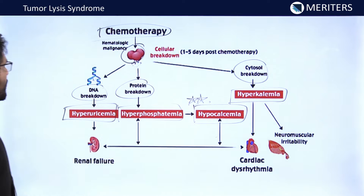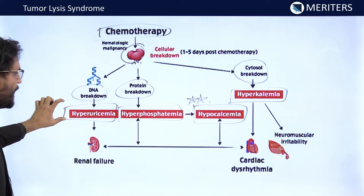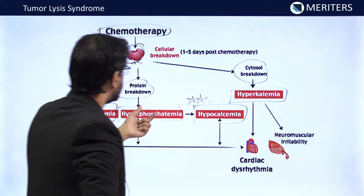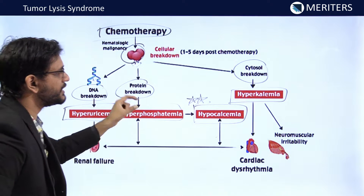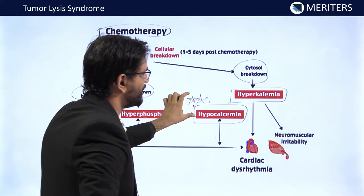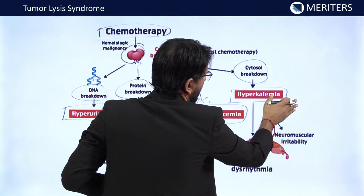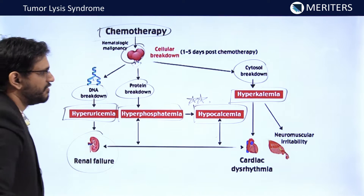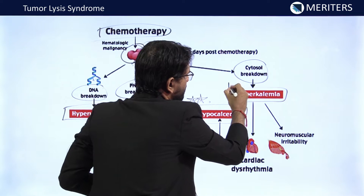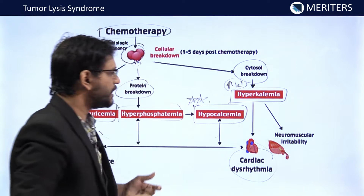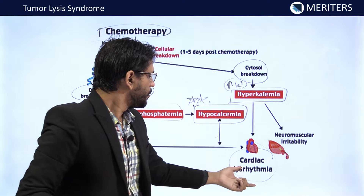To summarize: DNA breakdown leads to hyperuricemia; hyperphosphatemia leads to hypocalcemia — not hypercalcemia; and there is also hyperkalemia. All of these lead to renal failure. When there is an increased amount of potassium, there will be problems in the conduction of the SA node, leading to cardiac dysrhythmias and neuromuscular irritability.